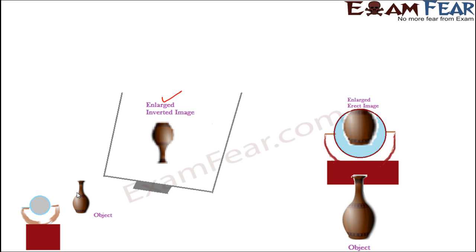If we bring the object very close to the mirror — extremely close — you do not see the image on the screen. That's because in this case the image is formed on the other side of the mirror, just like when we stand in front of a dressing table and cannot get our image on a screen. When the object is brought extremely close to the concave mirror, the image formed is erect and highly magnified, so you are only able to see some part of the image because the mirror is not that big.